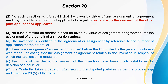Subsection 2 under Section 20: no such direction — that is, the direction made by the controller — will be given by virtue of any assignment or agreement made by one of two or more joint applicants for a patent, except with the consent of the other joint applicants. In the agreement or assignment, everyone should give consent for an equal and undivided share.